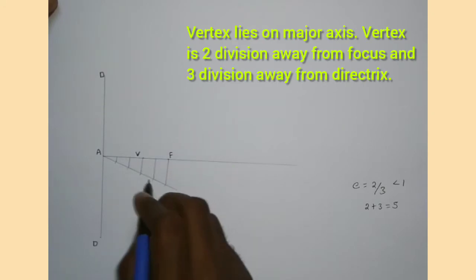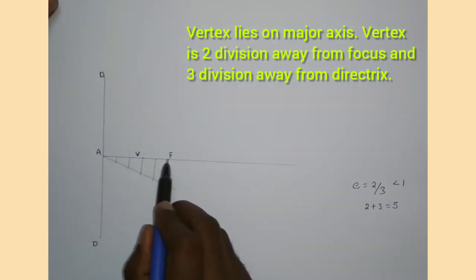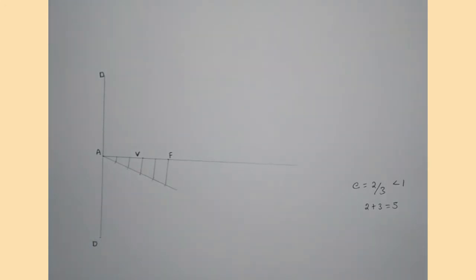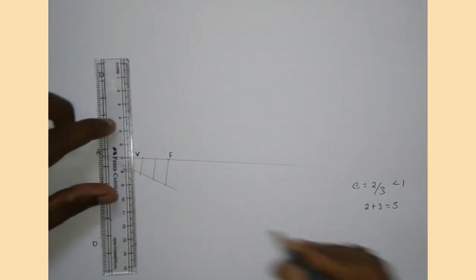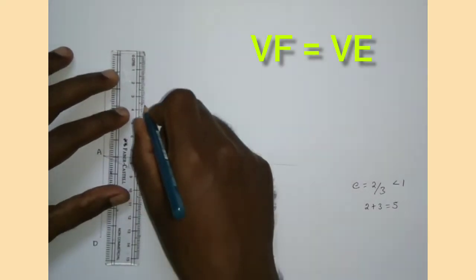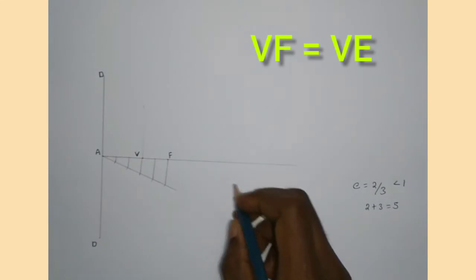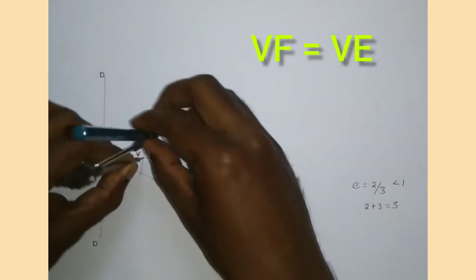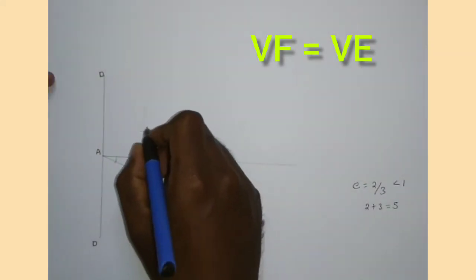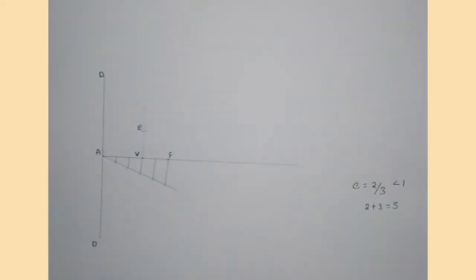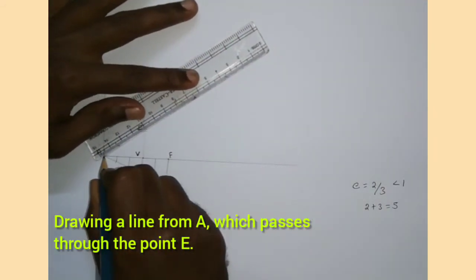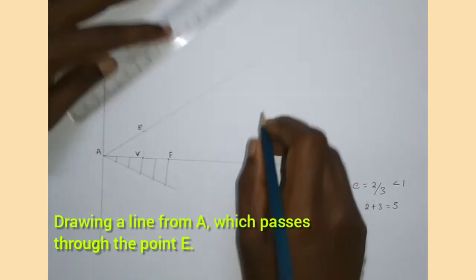Eccentricity is 2 by 3, meaning V is 3 divisions away from the directrix and 2 divisions away from the focus. Now I am drawing a vertical line from V, measuring the length VF on the compass, and cutting an arc on the vertical line — that point is E. I am drawing a straight line from A passing through E and extending it to some length.